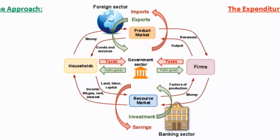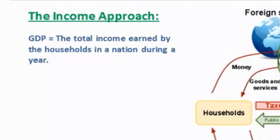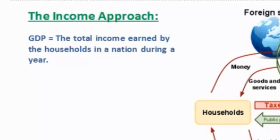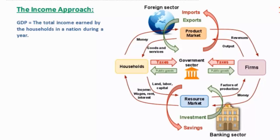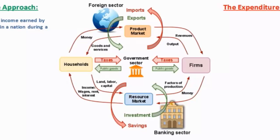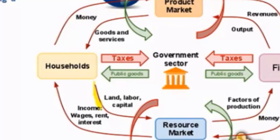Let's begin by defining gross domestic product more clearly. One way to measure GDP is by using the income approach, which measures the total income earned by households in a nation during a year. Any circular flow model includes two sectors: households and firms. Households are the providers of resources to firms, who demand resources in order to produce goods and services. As we see in our circular flow, households provide land, labor, and capital to firms in the resource market.